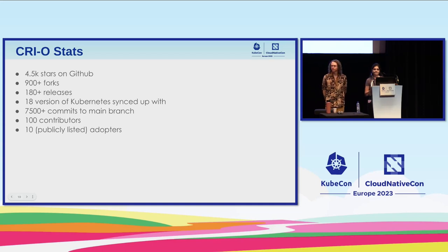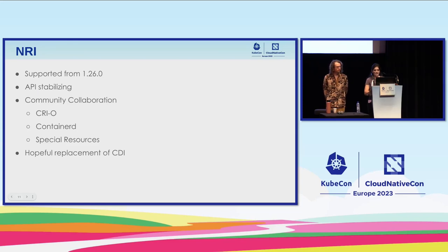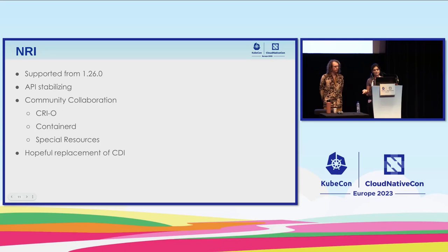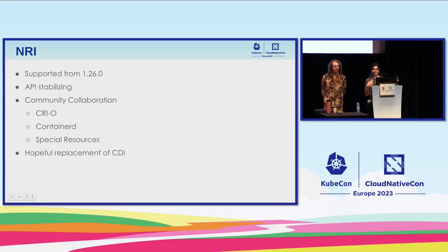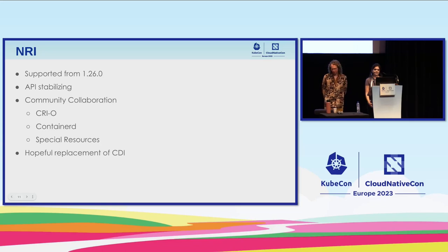We currently have 10 publicly listed adopters. A few updates since the last two or three releases: in 1.26, we added support for the Node Resource Interface. NRI lets you use plugins to carry out certain actions outside the scope of the CRI — it started with a focus on devices, but through community collaboration we're making it agnostic so it can be used for different types of resources. We've been working with containerd and CRI-O on NRI, and we're hoping to replace CDI with NRI completely in future releases.